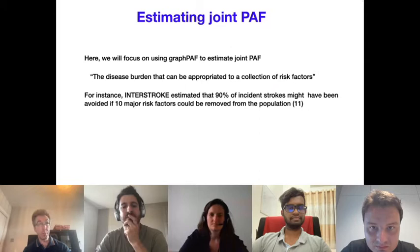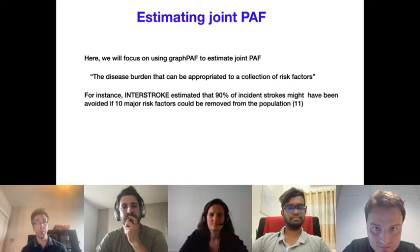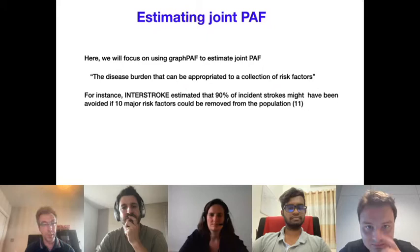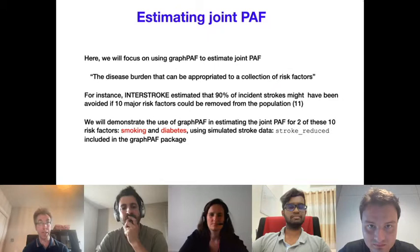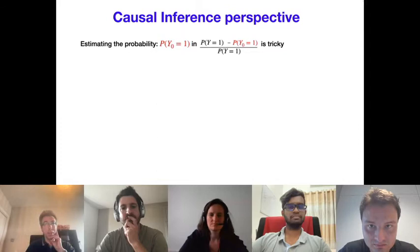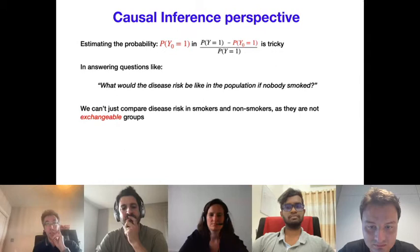Estimating attributable fractions is actually tricky due to causal inference considerations. Asking what disease risk would be if nobody smoked cannot be answered by simply comparing disease risk in smokers and non-smokers, because smokers may differ from non-smokers in multiple ways that affect disease risk apart from smoking itself — in causal inference parlance, the groups are non-exchangeable.